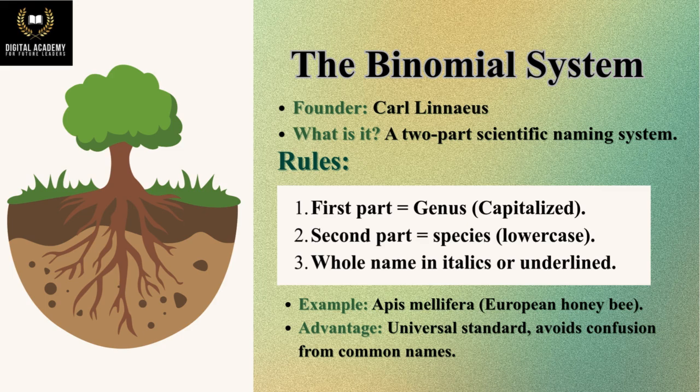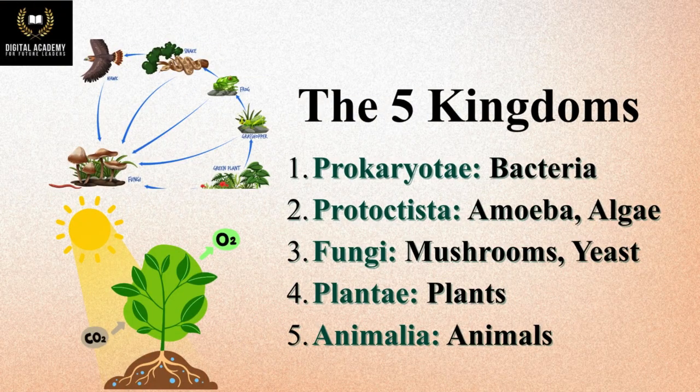Rule 1: Genus name is capitalised. Rule 2: Species name is lowercase. Rule 3: The whole name is written in italics or underlined. Example: Apis mellifera – the European honeybee. This universal standard avoids confusion from common names.